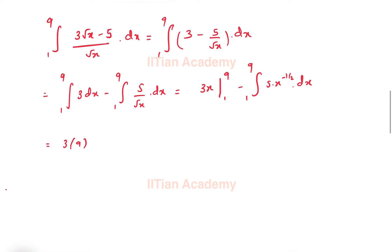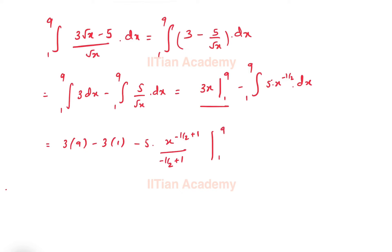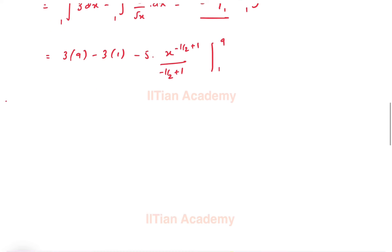We can further simplify: it is 3 into 9 minus 3 into 1 — we have put the limits in this part. For the second part, the integration would be x raised to the power (minus half plus 1), divided by (minus half plus 1), with limits ranging from 1 to 9.